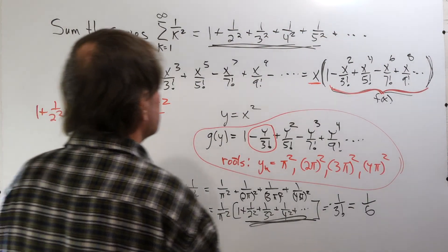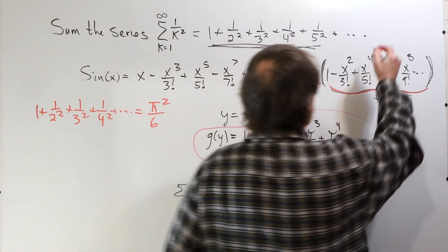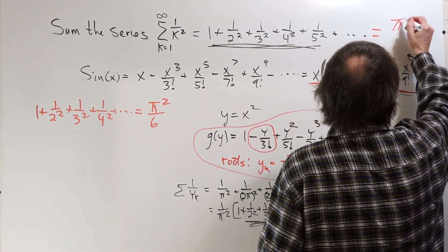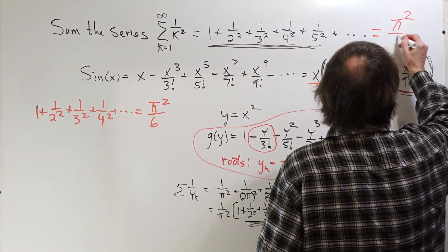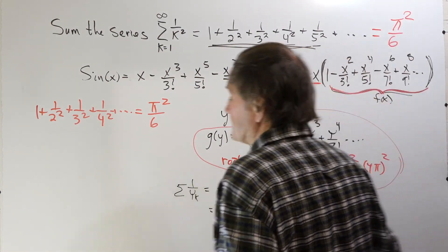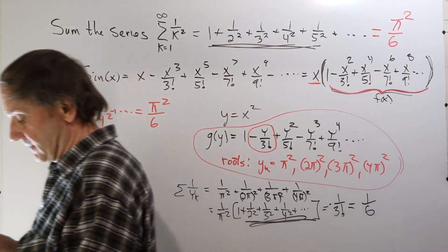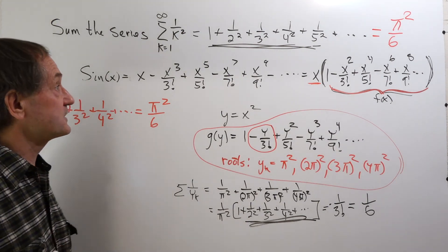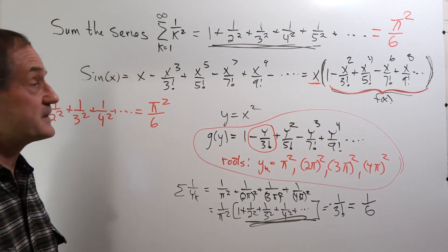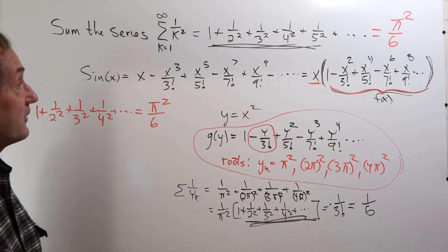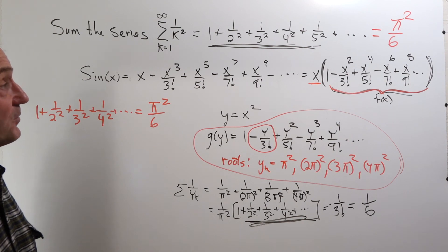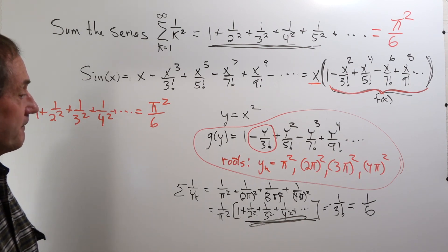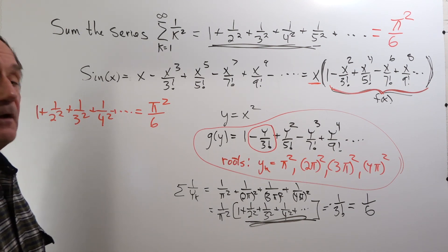So we have just summed the series with this clever technique. The sum of the series is pi squared over 6. That's how Euler summed the series that nobody was able to do for hundreds of years prior to him — pretty clever.